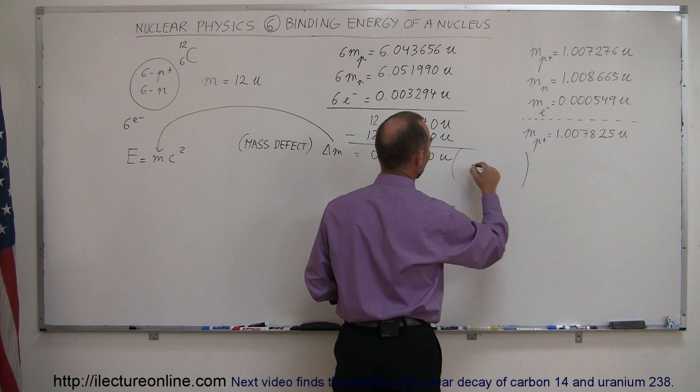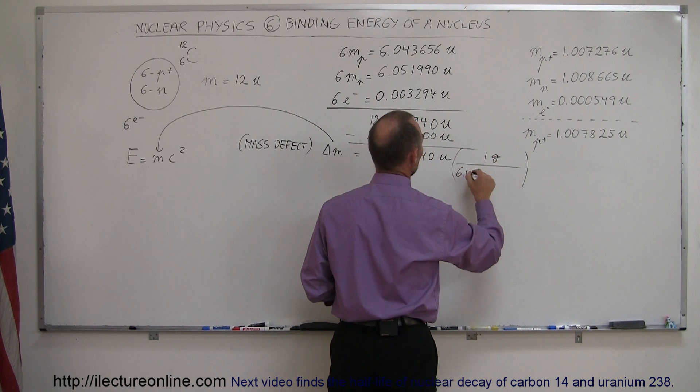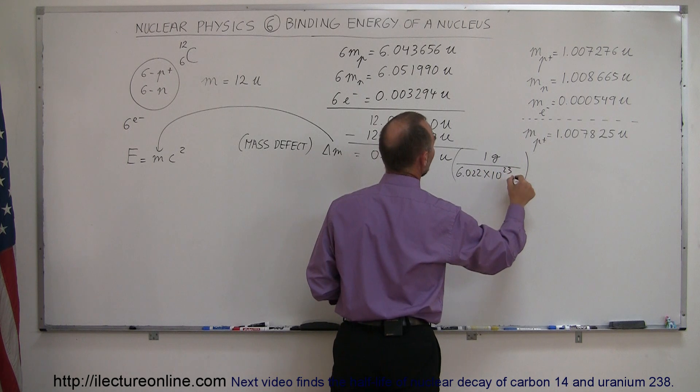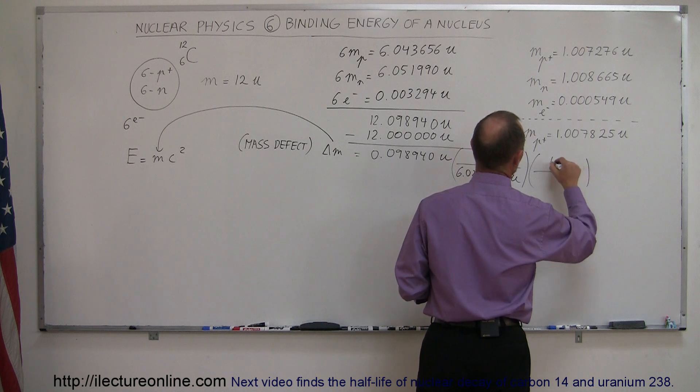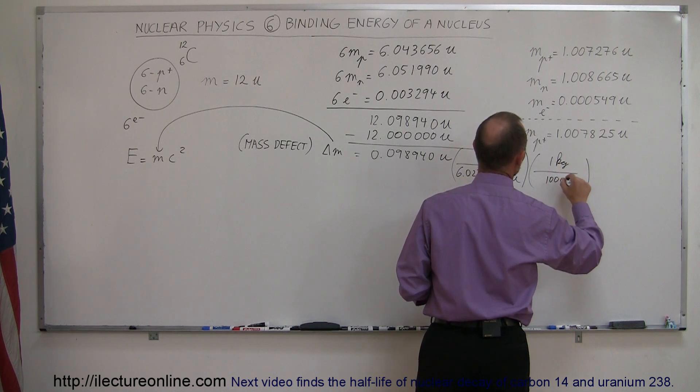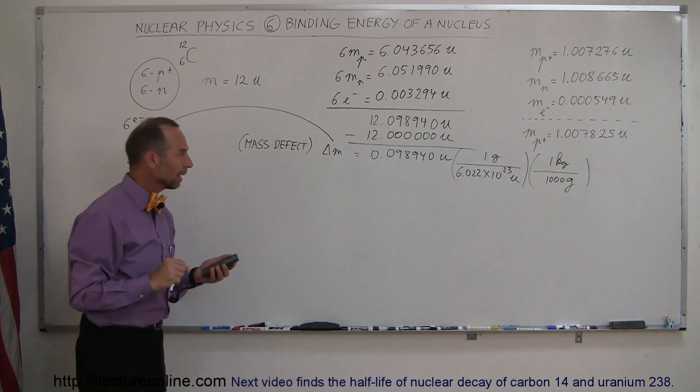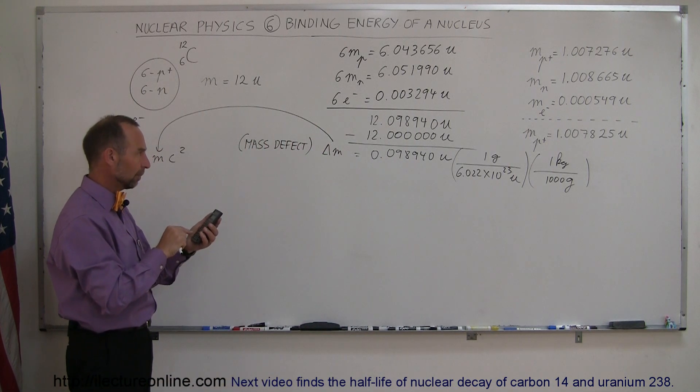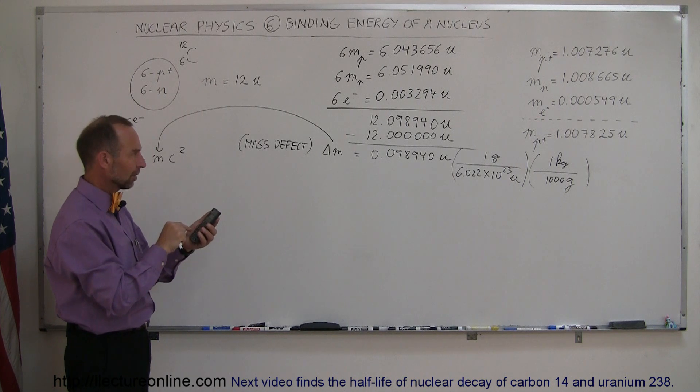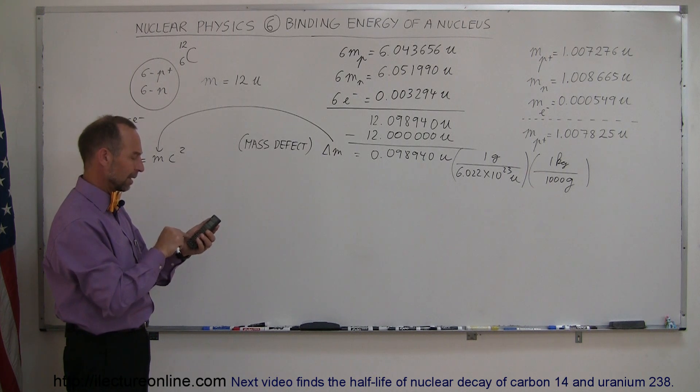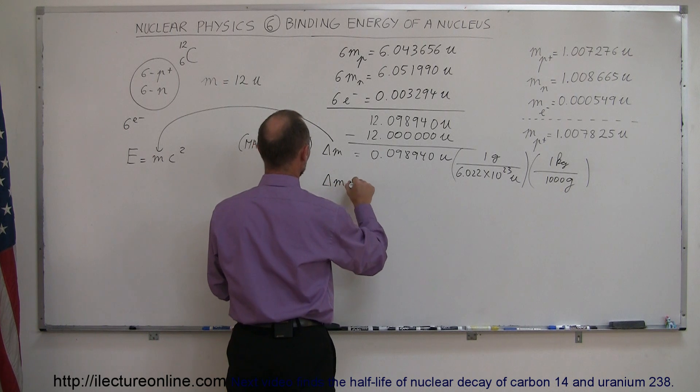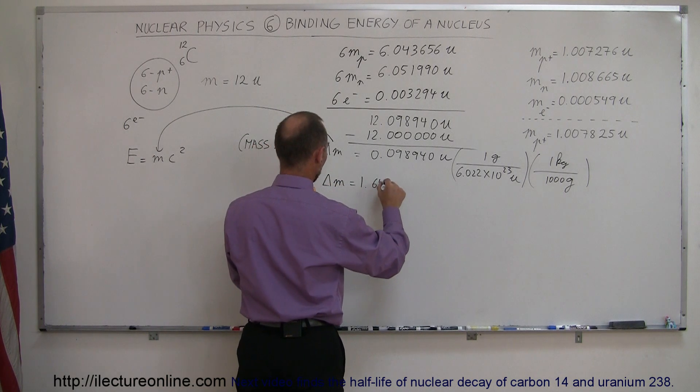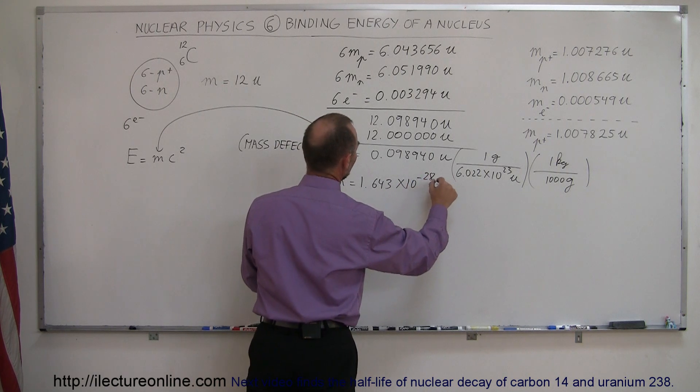So how do you convert atomic mass units to kilograms? Well, first you convert to grams, and one gram is 6.022 times 10 to the 23 atomic mass units, and then converting that to kilograms. One kilogram is equal to a thousand grams. So 0.09894 divided by 6.022e23 divided by a thousand equals, and the mass defect is 1.643 times 10 to the minus 28 kilograms.